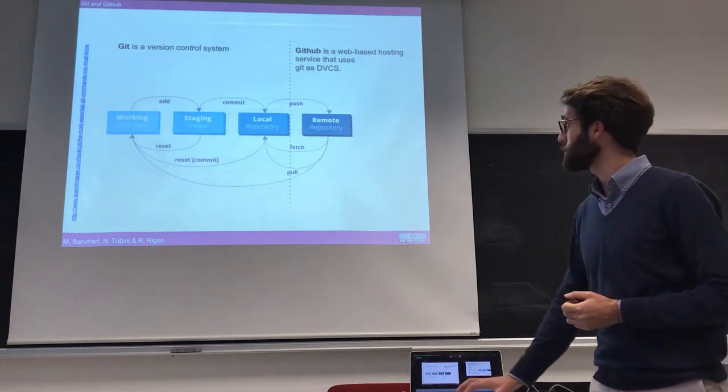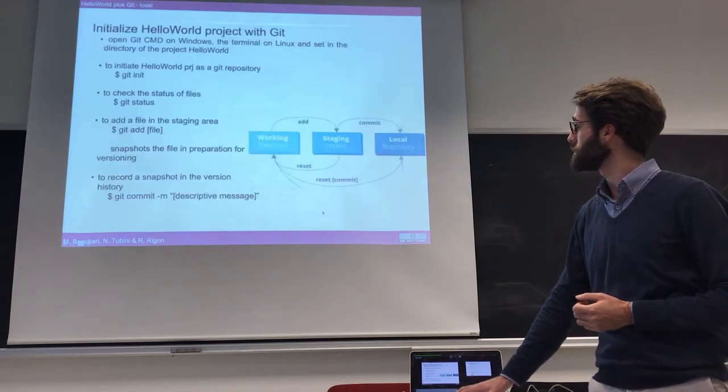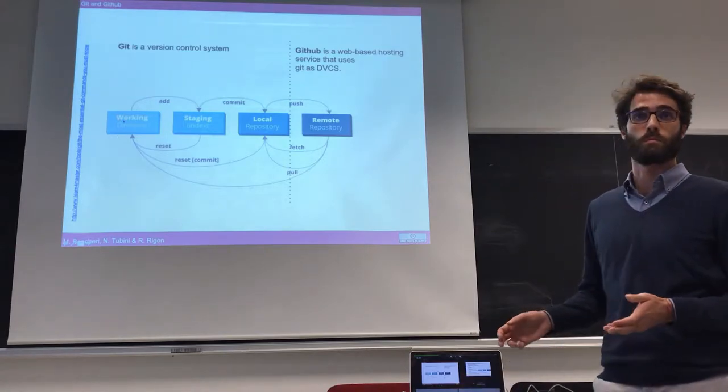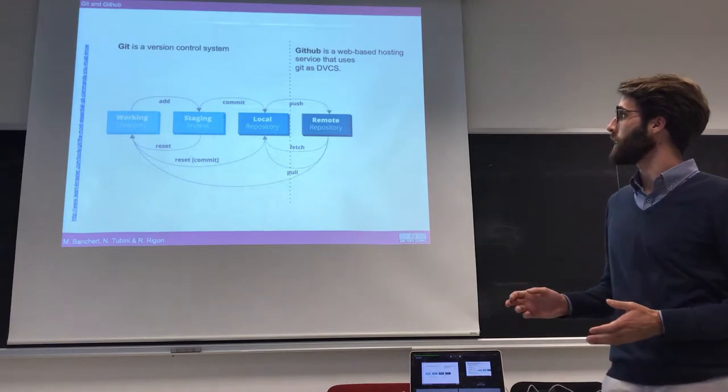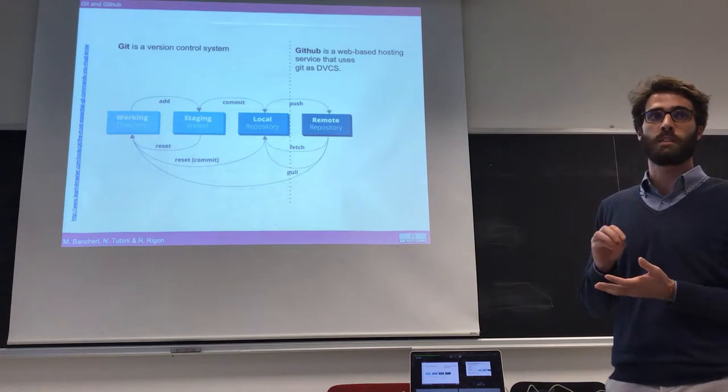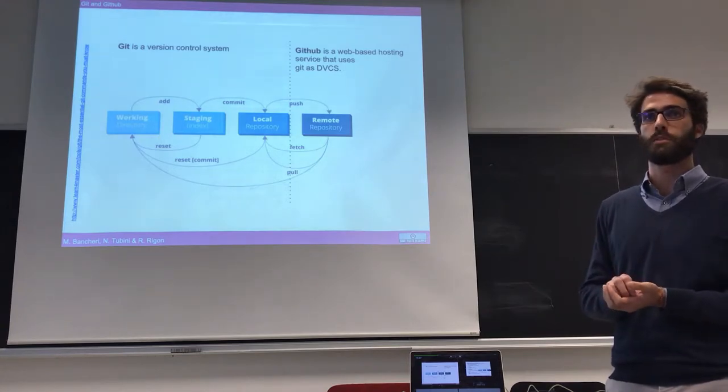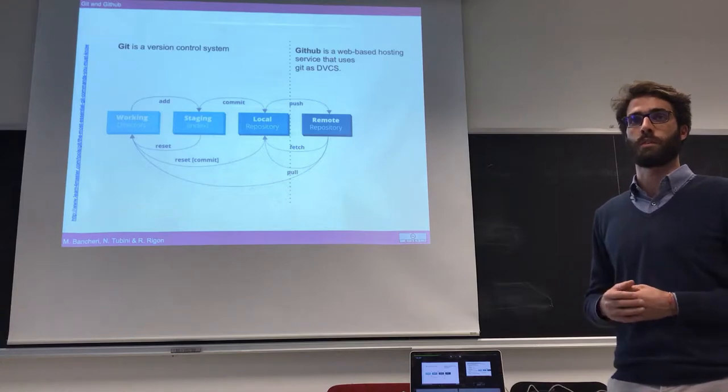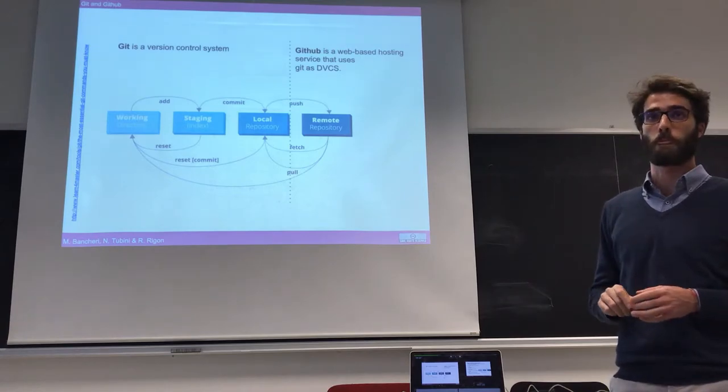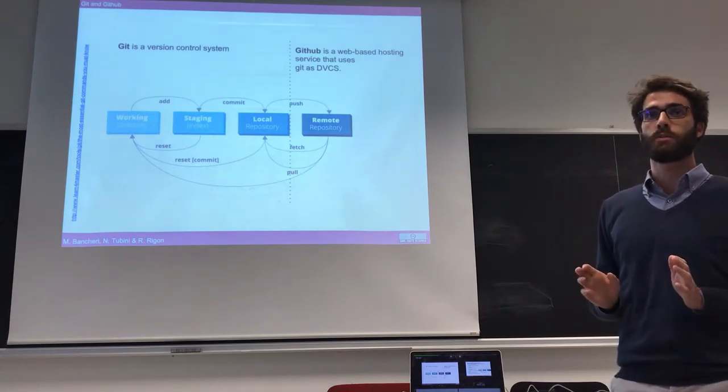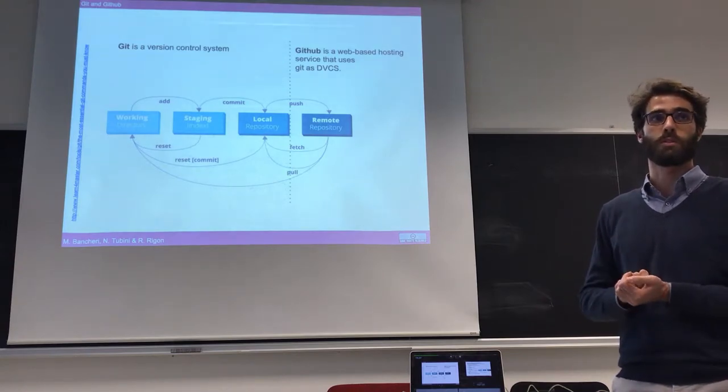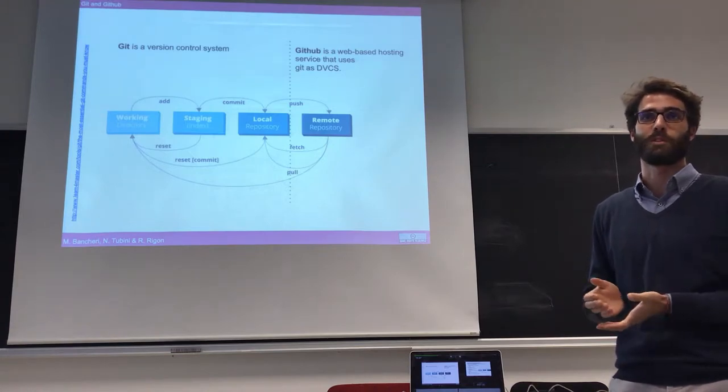In this picture you can see that you have your working directory where you work. The modifications are added to a staging index, and when you decide that these modifications are fine, you can memorize the history of your project—that is, perform a commit on your local repository. So far you can use Git without GitHub, but all your history is memorized on your machine, so if your machine breaks down you're losing your history.